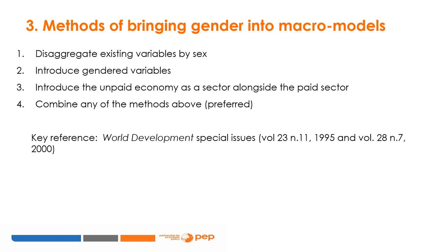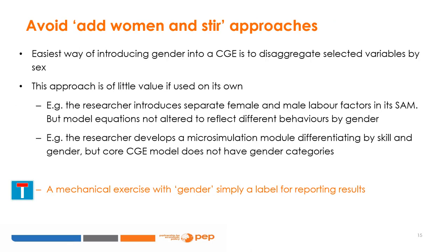A list of applications combining more than one method is provided in the references. It is important to offer a note of caution: the most obvious way to introduce gender into a CGE model is to disaggregate variables by sex, but this is of little value if it does not put into question any basic assumptions of the model. The constraints and rigidities that face women more than men when involved in economic activities must be reflected in the design of model equations, not just through data disaggregations.